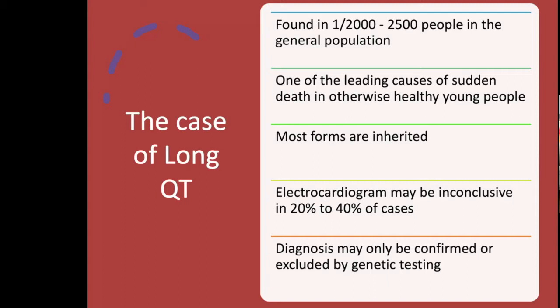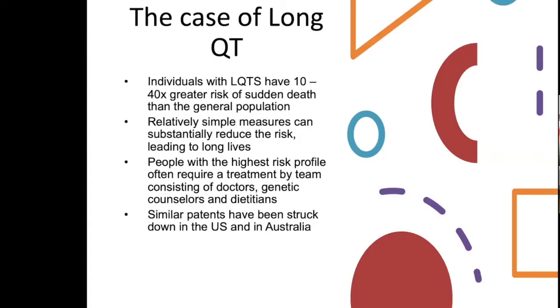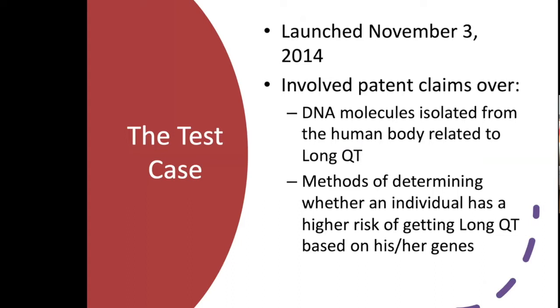Often the way we know you've got it is you've died, which is not a good outcome. But we can do a genetic test to find out. Some people we can do an electrocardiogram, but that doesn't even find everyone. So the only real way to know before something bad happens is to take your saliva or blood, put it through a PCR machine, and see whether you have the right allele to cause you to have this increased risk. Overall, people with this syndrome have a 10 to 40% higher risk of sudden death than the general population.